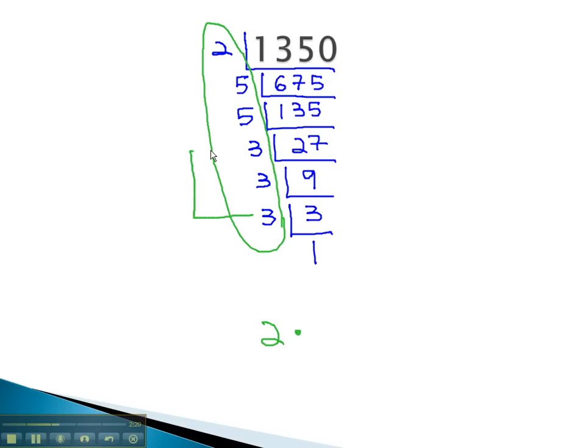Notice there were three 3's. We can write this using an exponent as 3 to the third power, times 5. Notice the 5 is on there twice, so we'll say 5 squared. The prime factorization of 1350 is 2 times 3 cubed times 5 squared.